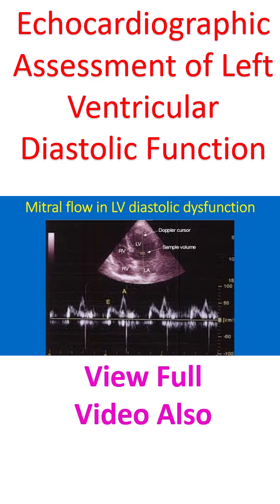The Doppler sample volume is placed just distal to the mitral valve so that it picks up the flow in the left ventricular inflow. The initial portion of the mitral diastolic flow is called the E wave — early diastolic — and the final portion, which occurs during atrial systole, is called the A wave.